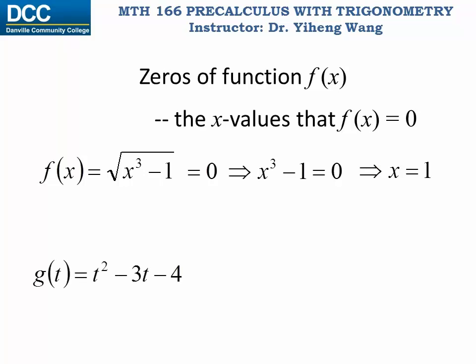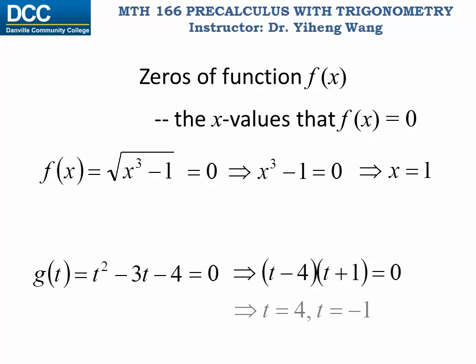Let's look at another example. This is a g function as a function of t. To find the zeros for this function, again, we simply set it equal to zero and then solve the equation for t. This is a quadratic equation, and we learned how to factorize it. The solutions will be t equals either four or negative one, and both of them are zeros for this function.